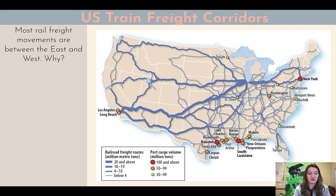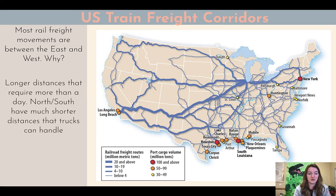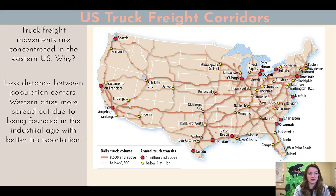Now looking at train freight: the thickness of these lines indicates how many millions of metric tons are transported along these routes, and the proportional symbols show how many millions of tons go through those ports. Most rail freight movements are between the east and the west — longer distances that require more than a day. Train freight isn't as efficiently suited to short distances. North-south movement distances are much shorter and trucks can handle those easily. So far distances go on trains, and north-south routes are largely covered by trucks.